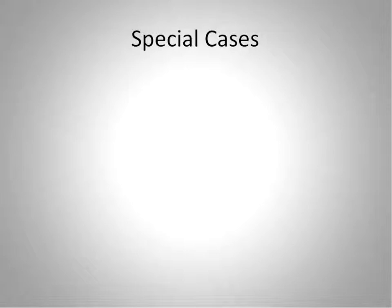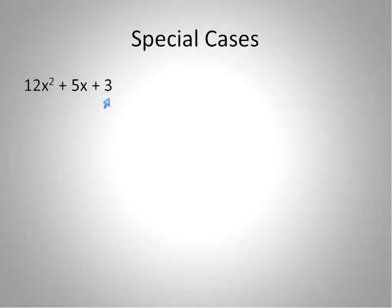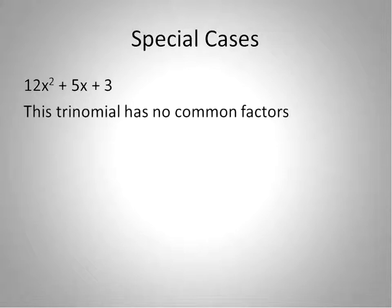Let's go over a couple of special cases that might slow you down. In this case, 12x squared plus 5x plus 3: the first and second terms have x in common, the first and final terms have 3 in common, but there is nothing common to every single term. If that's the case, the trinomial has no common factors — therefore it is already fully factored in this sense. There are other ways to factor a trinomial, such as into two binomials, but that's a different lesson. For taking out common factors, you can't take out any more from these three terms.